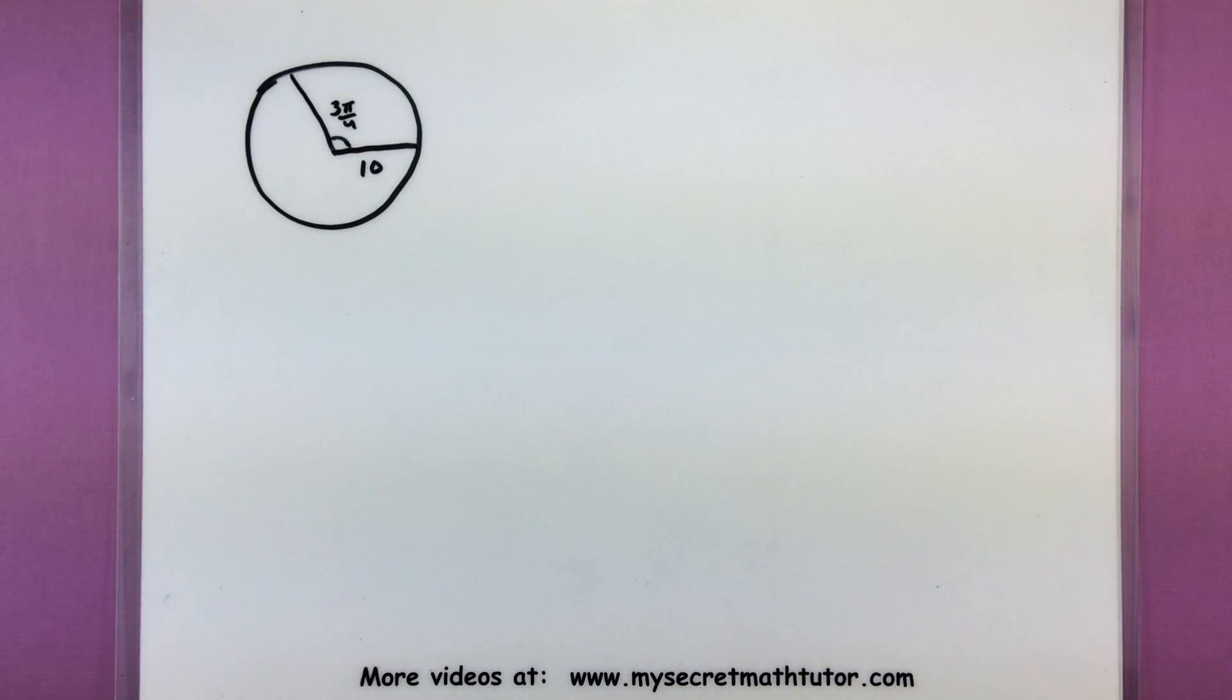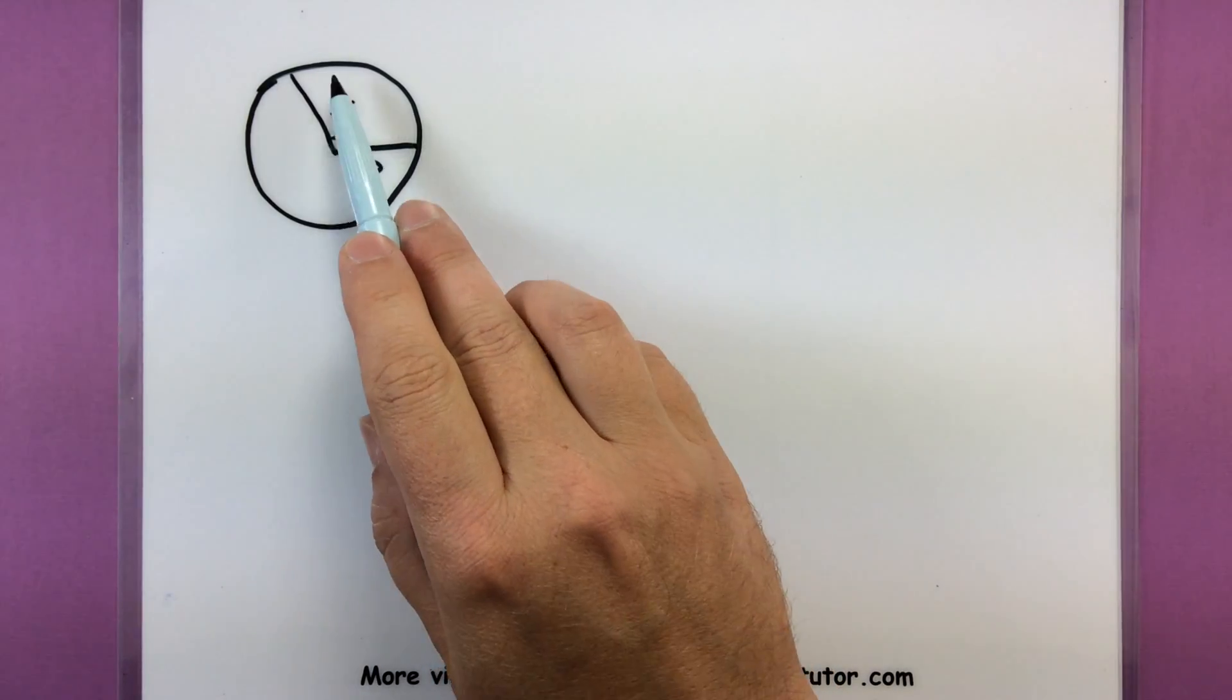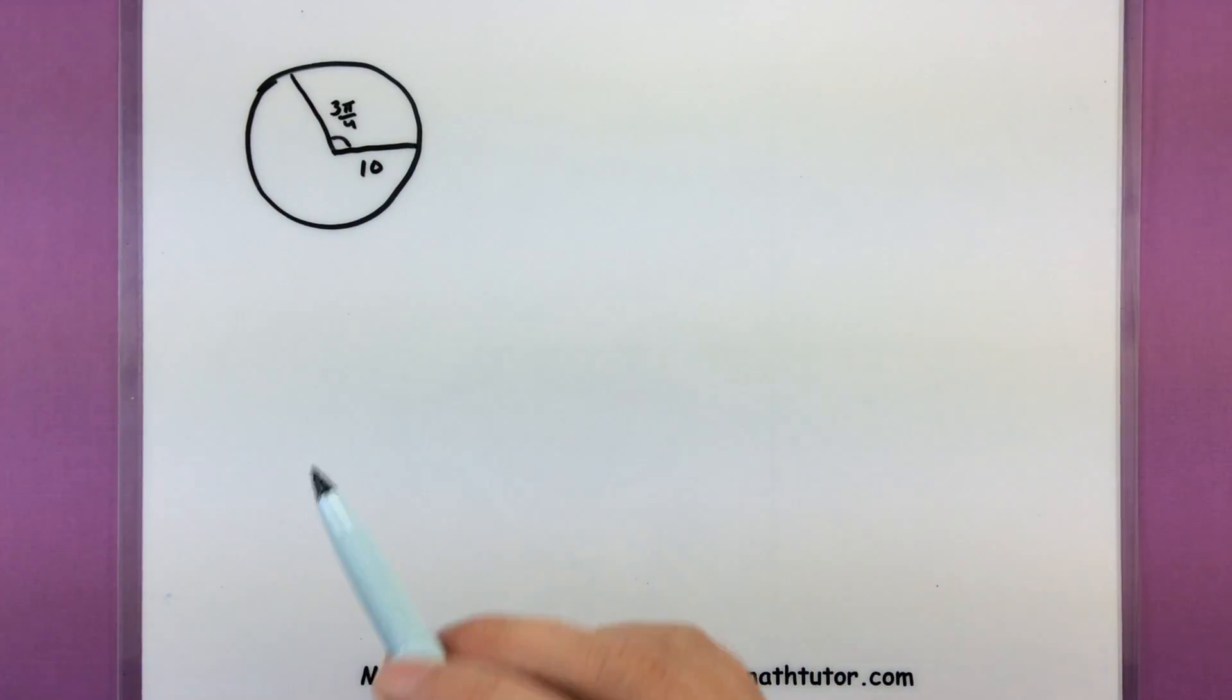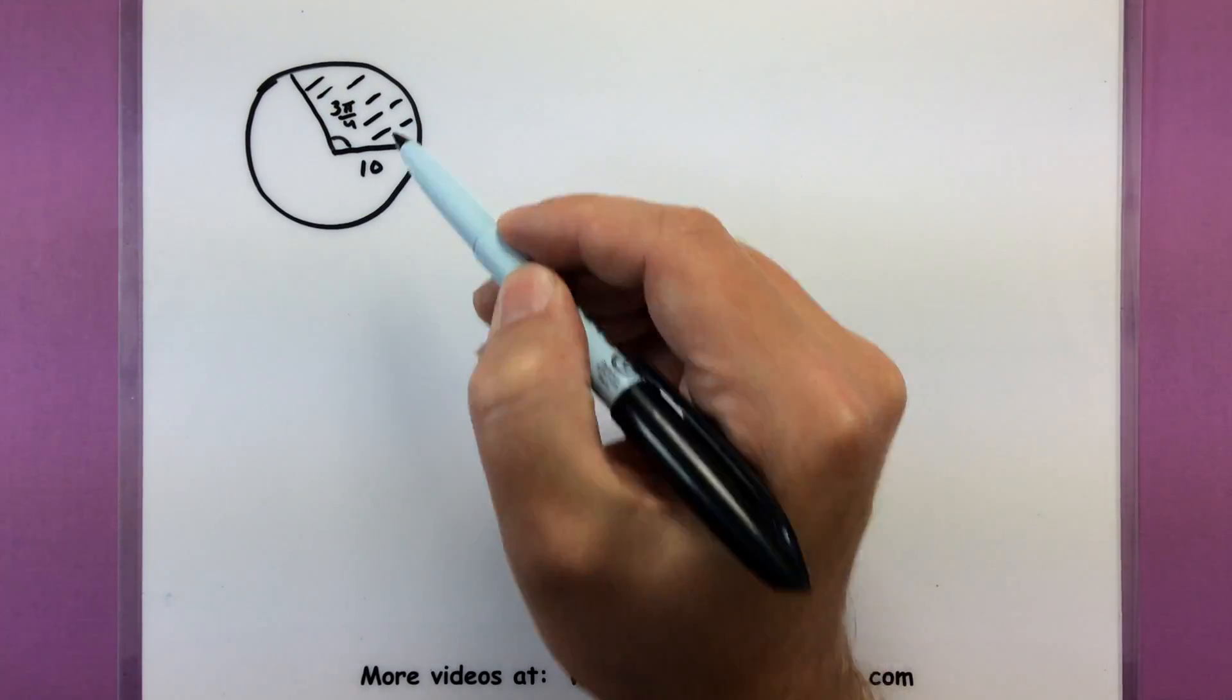So the first one we're going to do is this circle right here. It has a radius of 10 and it's marking out an angle of 3π over 4. So we're really curious about the area of just this region up here.